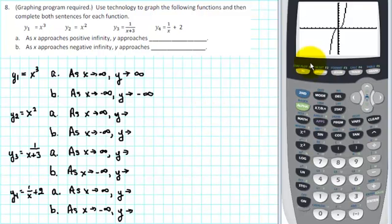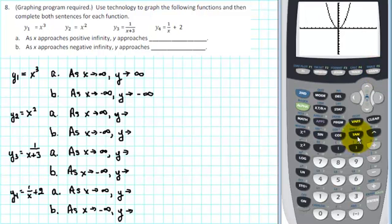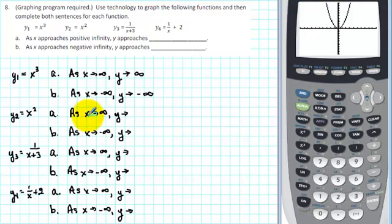Our next function is y2 equal to x squared. Go back to y equals, turn off y1, move down to y2, and enter x raised to the second power, or x squared. For the right end behavior, as x increases without boundary, we see that as we move to the right we're also moving up without any boundary. So the y values are approaching positive infinity — as x goes to infinity, y goes to positive infinity.